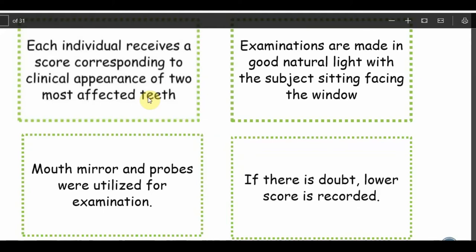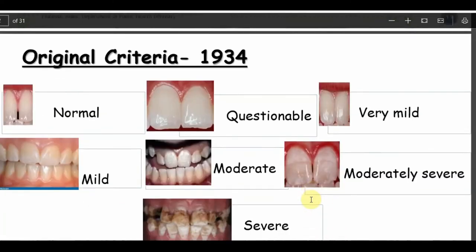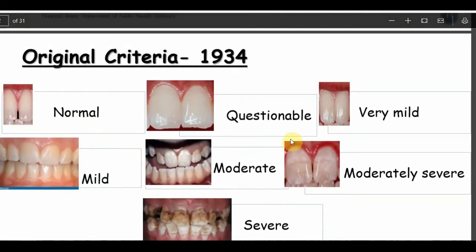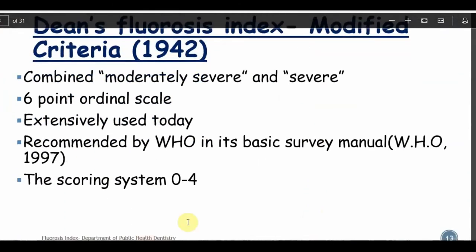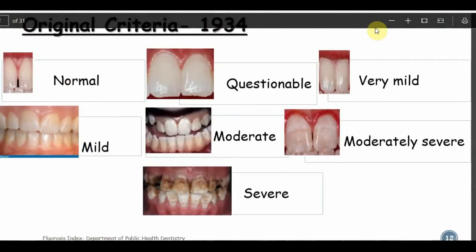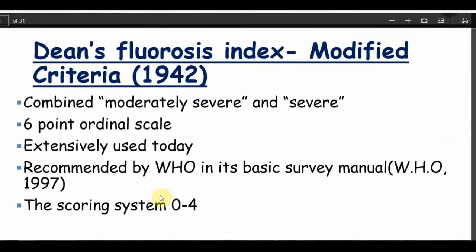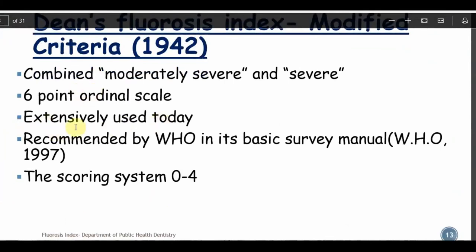Whichever two scores come highest, we take them. If there is a doubt, the lower score is recorded. The original criteria from 1934 had: normal, questionable, very mild, mild, moderate, moderately severe, and severe — a seven-point ordinal scale. But in 1942, the modified version combined moderately severe and severe, making it a six-point ordinal scale. This modified version is extensively used and is recommended in the basic survey manual 1997, fourth edition, with a scoring system between zero to four.